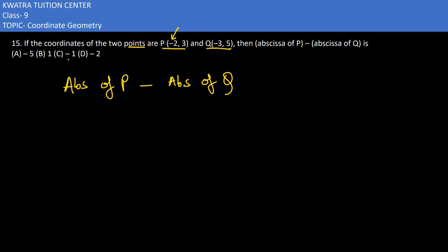X coordinate ko abscissa boolte hain. So abscissa of P is minus 2, minus the sign as it is. Abscissa of Q would be minus 3. So we have minus 2 minus minus 3, and minus minus becomes plus, so minus 2 plus 3 would be positive 1, which is option B.